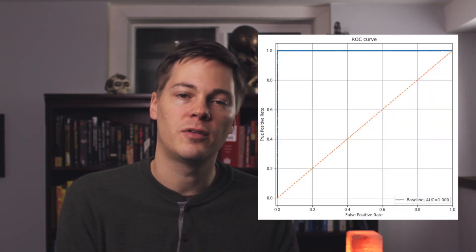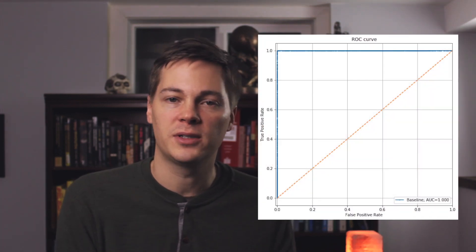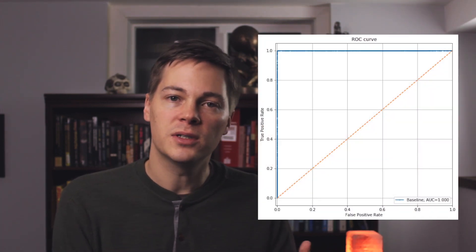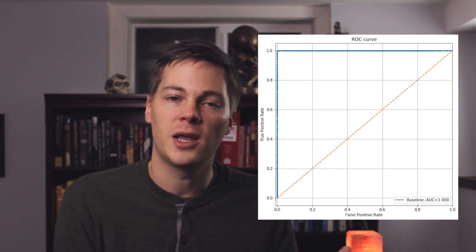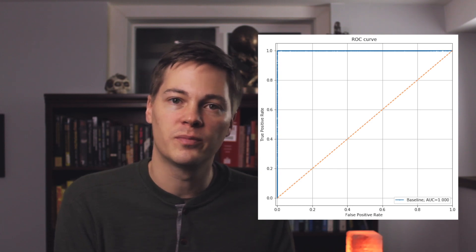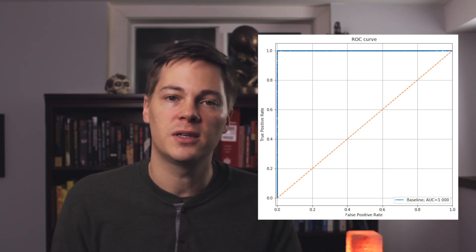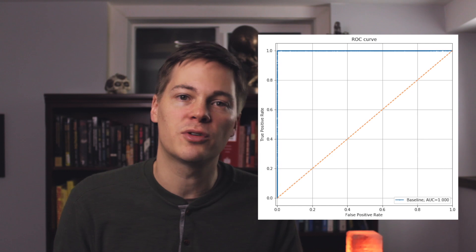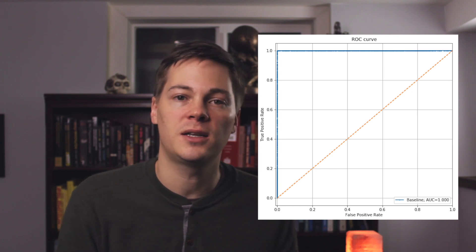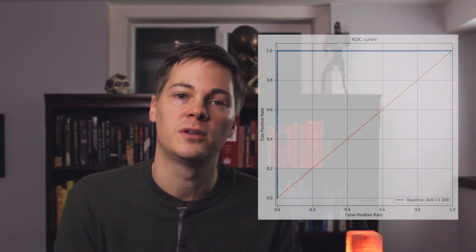Here's an ROC curve of our model on the holdout set. You can see that we essentially have a perfect model with an AUC of 1, which indicates that there's a significant difference between the training and test datasets with respect to the input features. The performance of this model is a measure of how big our problem is — the better the model, the bigger the problem.